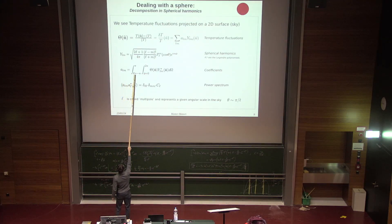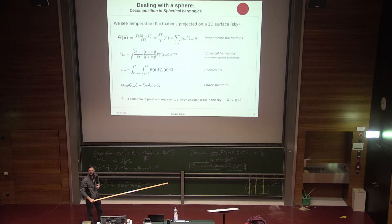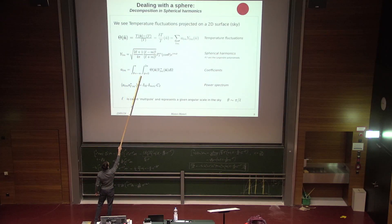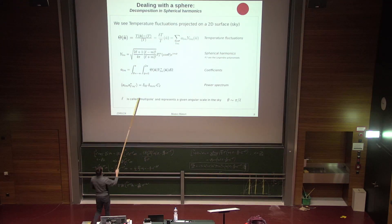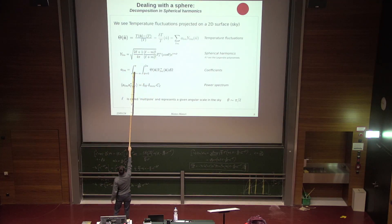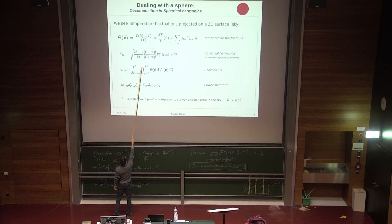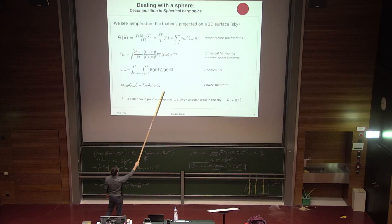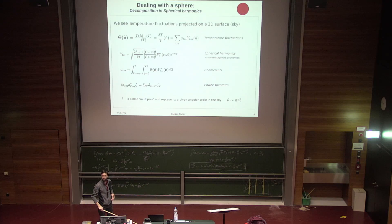We describe this with a correlation function, exactly as we did with galaxies. We have the field we want to characterize — the temperature contrast — completely analogous to the density contrast used for galaxies and structure formation. We had (rho minus rho_background) divided by rho_background for density; here we do the same with temperatures: the temperature at position n-hat minus the average temperature, all normalized by the average temperature T.